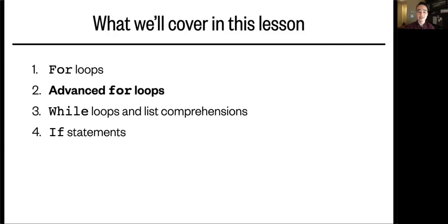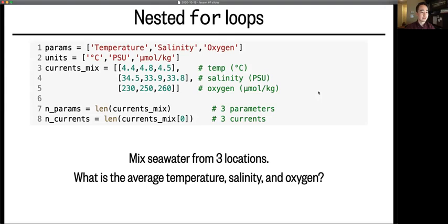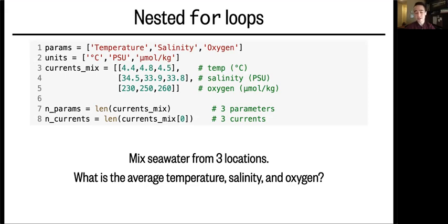Okay, welcome back. In the second segment, we'll continue discussing for loops and some ways to make them even more useful. So in this example, imagine you have ocean currents from three locations, or maybe you could think of water masses from the Atlantic, Pacific, and Indian oceans.